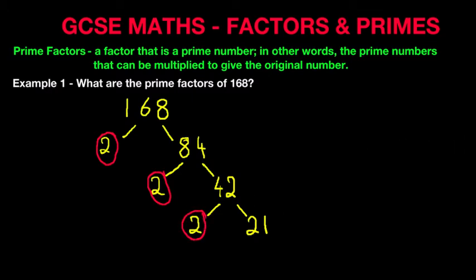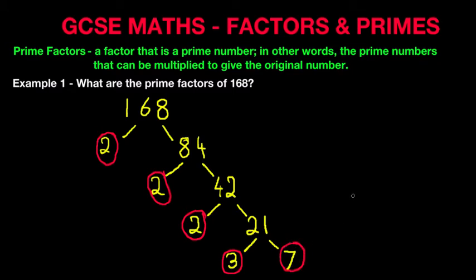There's our prime number again. We're now down to 21. And 21 — we know that 21 is made up of 3 times 7. So we can write down 3 and 7. Now 3 is a prime number and 7 is a prime number. And that's it, we're done. We can't divide the numbers any further.